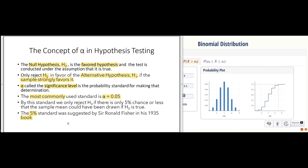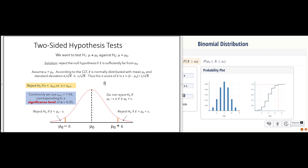I'll have a little bit more to say about that. But for many kinds of things, a significance level of 0.05 is what's used. So let's start out by having our null hypothesis be that the mean is some specific value — the mean is equal to mu naught. If we're drawing a large enough sample, we can assume a normal distribution.